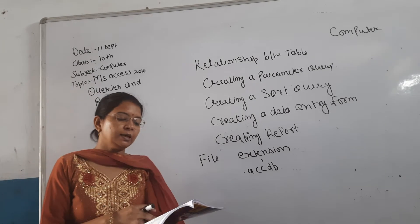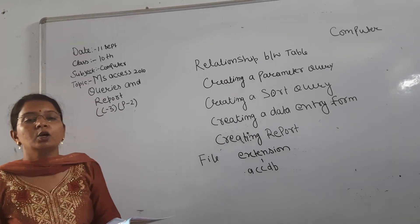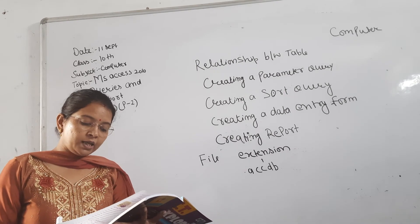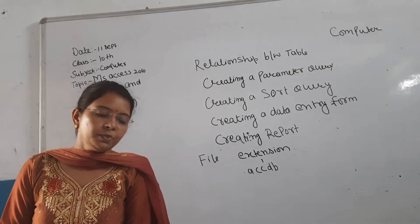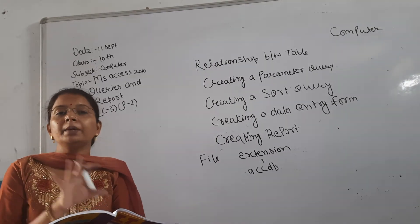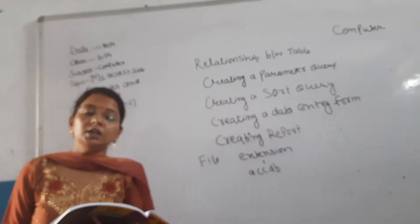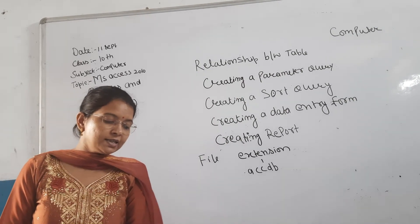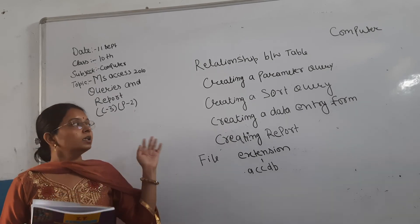So, what do you think about this chapter? In this chapter we have learned about queries: the types of queries, autolookup query, action query, crosstab query, select query, advanced filter, total summary, and parameter query. We also learned how to create relationships between two tables, how to create a select query, what a parameter query is, how to create a sort query, how to create a data entry form, and how to create a report.